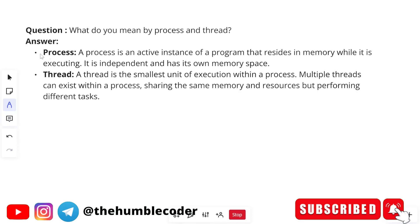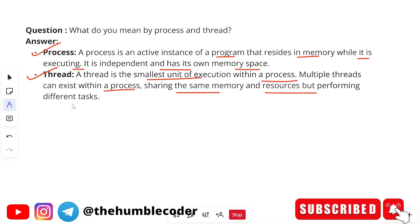Next question: what do you mean by process and thread? This is a question from operating systems. A process is an active instance of a program that resides in memory while it is executing — it is independent and has its own memory space. A thread is the smallest unit of execution within a process; multiple threads can exist within a process, sharing the same memory and resources but performing different tasks.